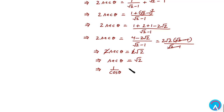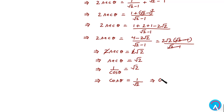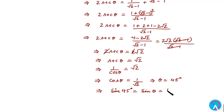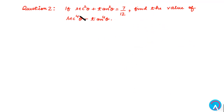Taking the reciprocal on both sides, cosθ = 1/√2. When cosθ = 1/√2, this implies θ = 45°. When θ = 45°, we know that sinθ = sin45° = 1/√2. So for question 1, the answer is 1/√2.